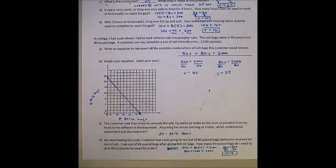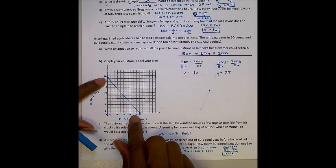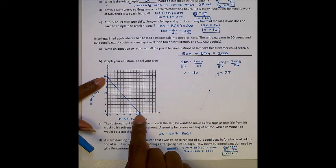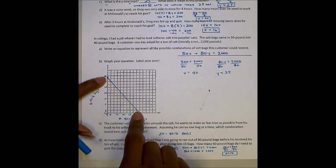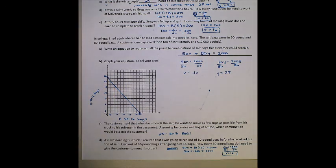There we have it. Using standard form to make story problems, and also plugging in to make sure that you know the combinations are all along these lines. Even though we only find the x and y intercepts, remember that the whole line that connects this are true values. These work. See ya.